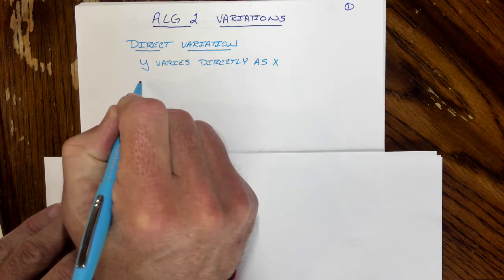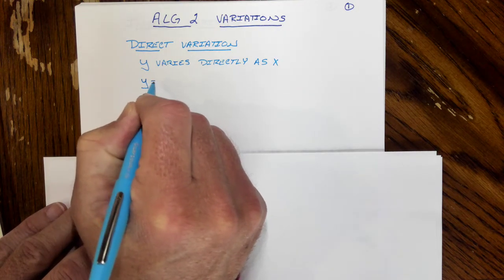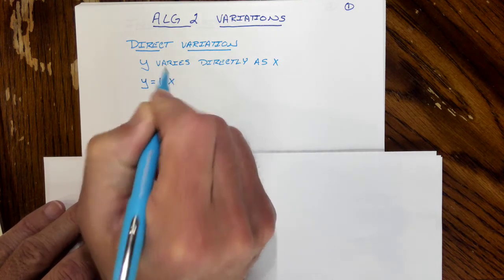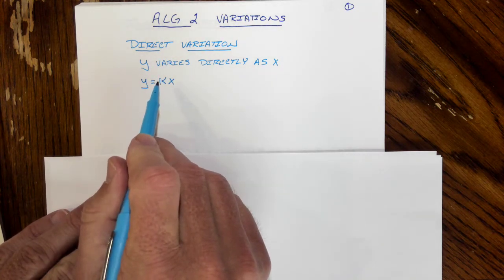Where does direct variation come from? Well, the general formula looks like this, where people say then you've got to go through and find the constant of variation.